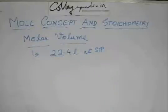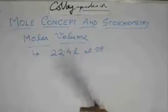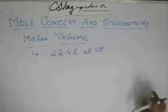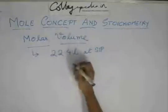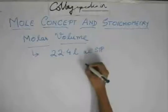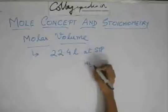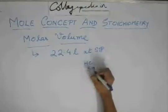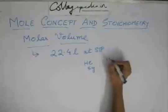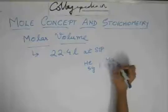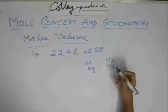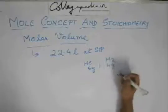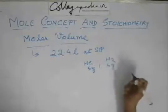Generally from molar volume and this 22.4 litre thing, they give questions. We will go to these questions when we go to the reactions. Just for the molar volume, for the time being we can have questions like: suppose we have 5 gram of helium and 4 gram of H2. What are the ratios of their volumes at STP?